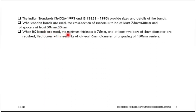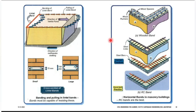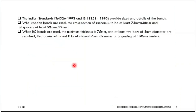RC bands are used with a minimum thickness of 75 mm. At least two bars of 8 mm diameter are required. The ties with steel links should be at least 6 mm diameter at a spacing of 150 mm centers. Spacing of ties should be 150 mm. You can use 8 mm diameter bar for both longitudinal and transverse directions.